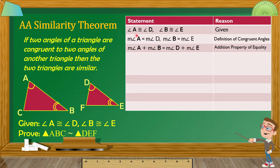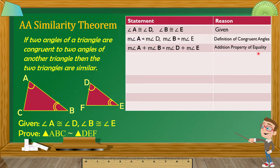Kung baga, ginawa natin dito, measure angle A equals measure angle D. Pwede kong i-add sa left side si measure angle B, at sa right side, in-add ko si measure angle E. Pwede yun kasi si measure angle B at measure angle E ay equal naman. Kaya, pwede naman nating i-add sa left at sa right by addition property of equality — in-add natin sila both sides kasi equal naman sila.